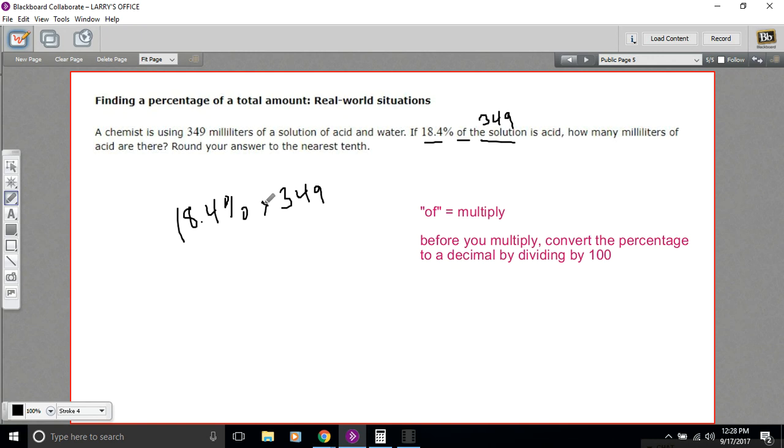Before we multiply, we've got to convert that percent to a decimal by dividing by 100. You might do the shortcut in your head that means moving the decimal place to the left two places, or you could just do it on the calculator.